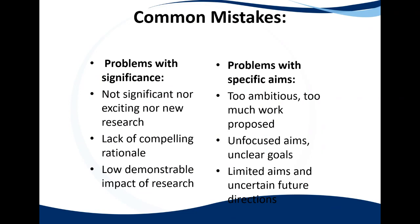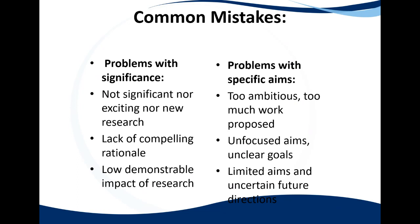Limited aims and uncertain future directions are also problems. At the end of a study — just as in your dissertation's conclusion chapter — you need to say where this leaves us and how we can look forward. The same applies in a grant proposal: the dissemination, evaluation, and conclusion sections should assist us to think about how we go forward in addressing the issue.